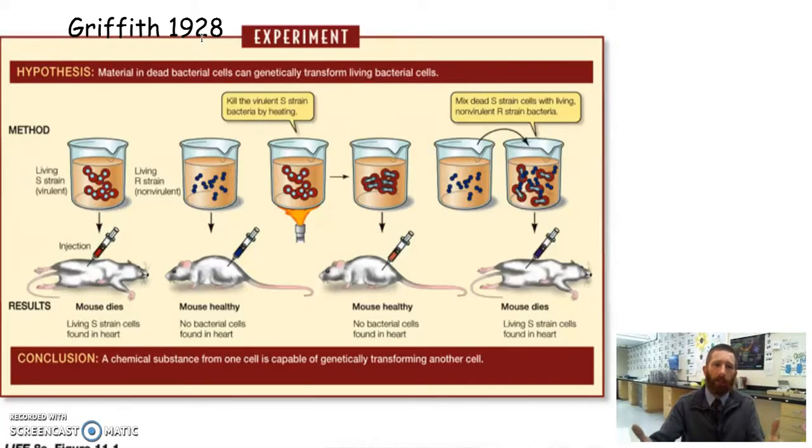All right. So Griffith, he didn't start out to study DNA. His goal was to study pneumonia and to figure out what causes pneumonia and to figure out how to combat pneumonia. So he discovered that the bacteria that causes pneumonia, Streptococcus pneumoniae, there were actually two strains and he called them the smooth strain. So we're going to write that down. So this is the S strain.